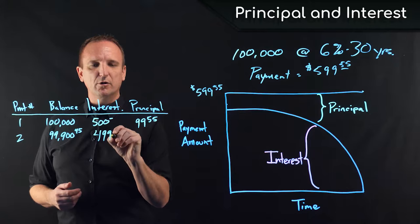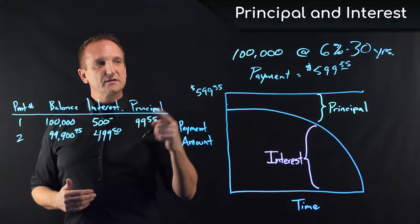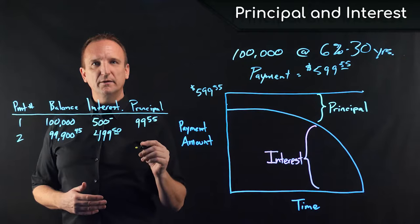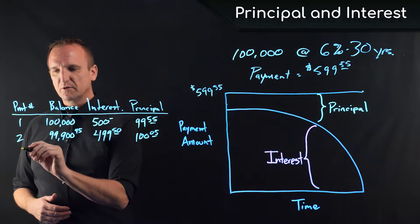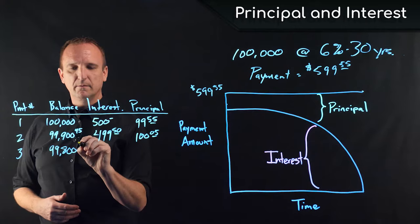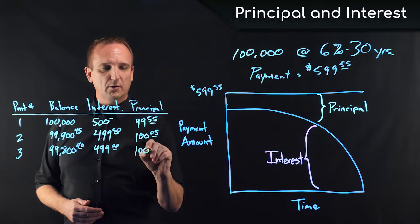As we can see, the amount of interest with each payment that's being charged on the loan is going down. And since the remainder of the payment is applied to principal, then on the second payment, $100.05 is applied to principal, thereby reducing the unpaid principal balance again, so that on the third payment, our new balance is $99,840. Half a percent on $99,840 is $499 even, which means that $100.54 will be paid towards principal, and so on and so forth.